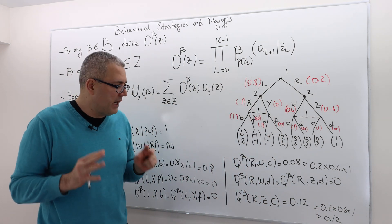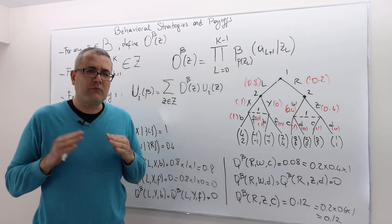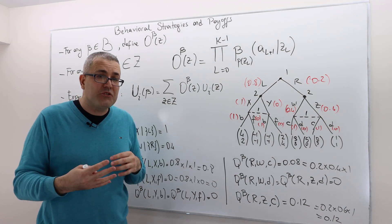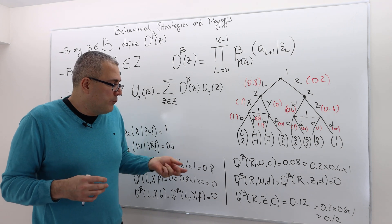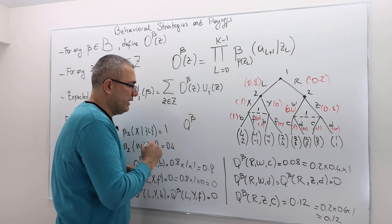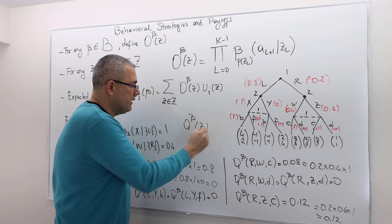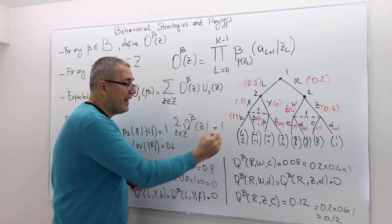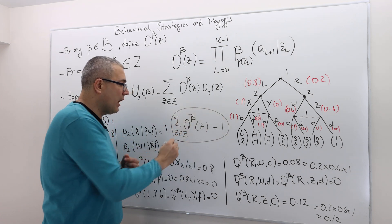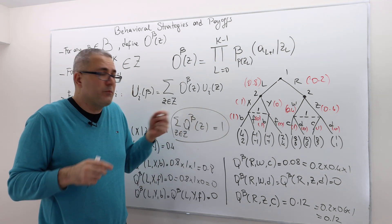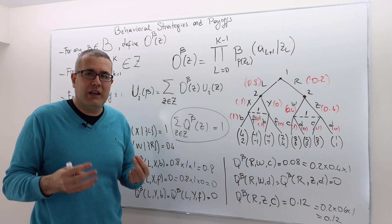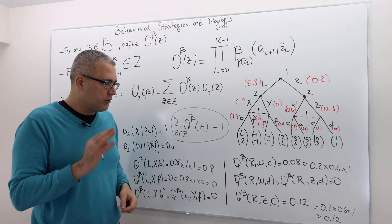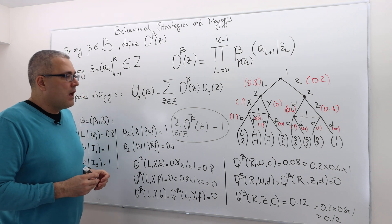You must be careful because these are all potential histories. The probability distribution, this O(β,Z), Z in set Z has to add up to 1, because this is a probability distribution, so it has to add up to 1. If it is not, trust me, you're making something wrong. So be careful about it.